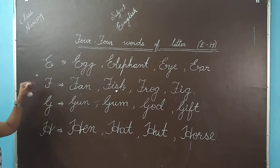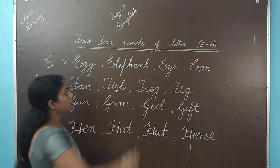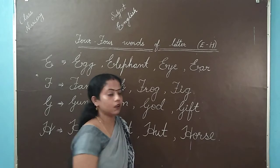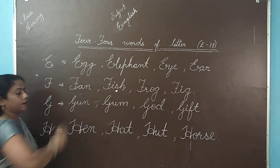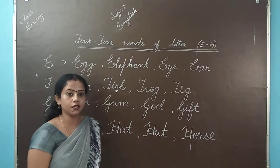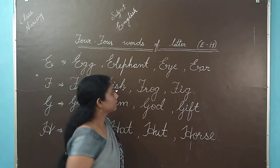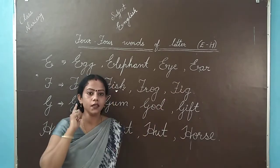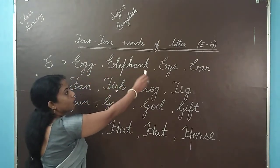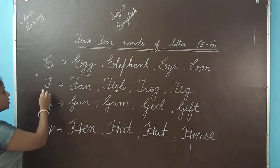First letter is E. E for Egg, E for Elephant, E for Eye, E for Ear. Egg yani Anda. Elephant yani Hathi. Eye yani Aakha. And Ear, Ear yani Kaan. E for Egg, E for Elephant, E for Eye, E for Ear.